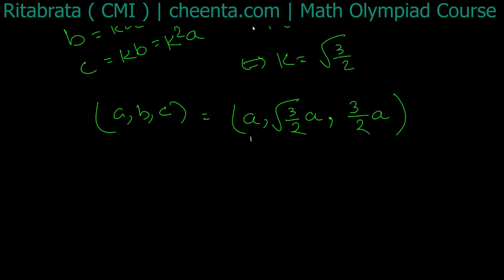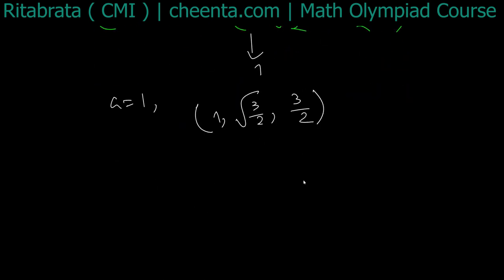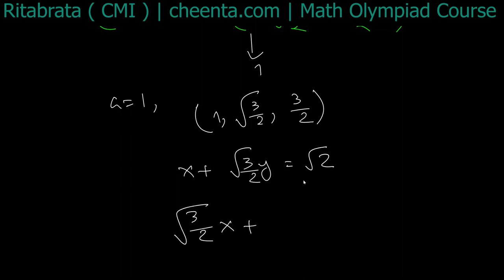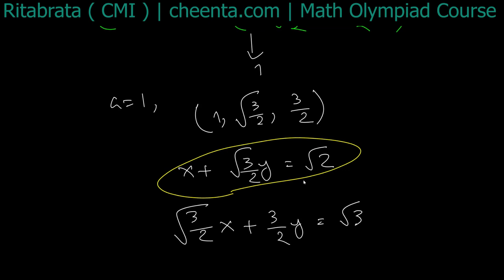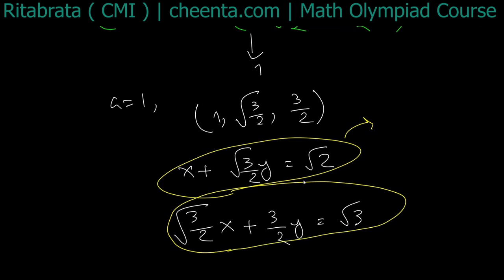For any positive real number a, this pair works. For example, taking a equal to 1, the triplet (a, b, c) is (1, root(3/2), 3/2). Then ax plus by equals root 2 becomes x plus root(3/2)·y equals root 2, and bx plus cy equals root 3 becomes root(3/2)·x plus (3/2)·y equals root 3. These two equations are the same — you just multiply the first by root(3/2) to get the second — so they have infinitely many solutions.